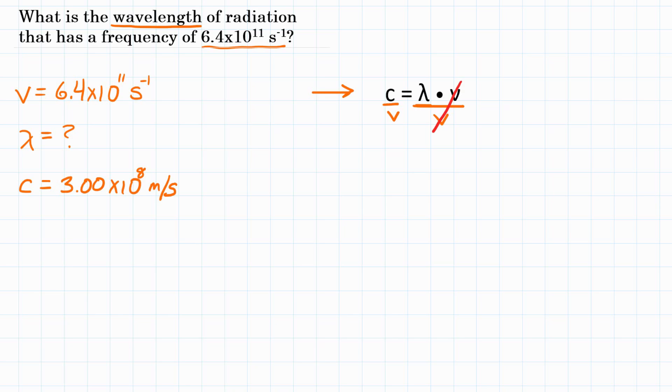Okay, so let's rewrite the equation. We're going to flip it so that wavelength is on the left side. And wavelength will be equal to the speed of light divided by frequency. Now we can plug in the values that we have.